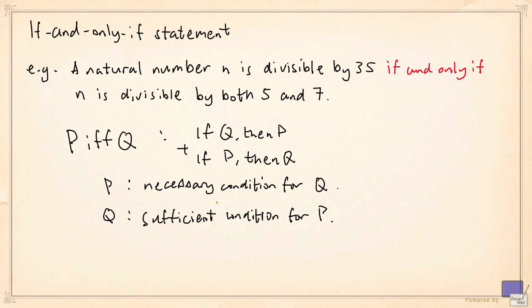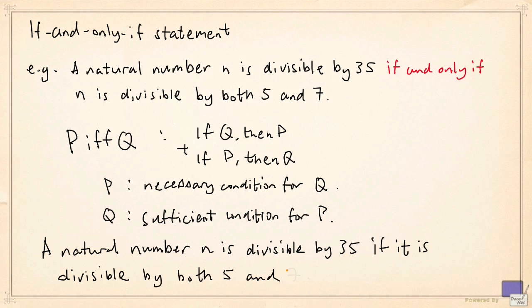So for our example, if we consider the statement a natural number n is divisible by 35 if it is divisible by both 5 and 7, we are stating a sufficient condition for a natural number n to be divisible by 35. So proving sufficiency means proving this statement here.